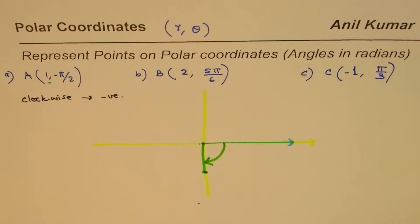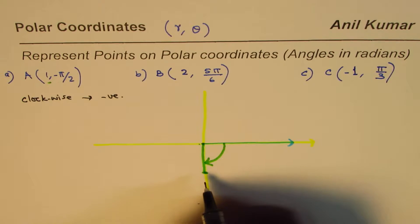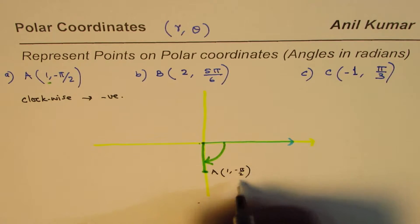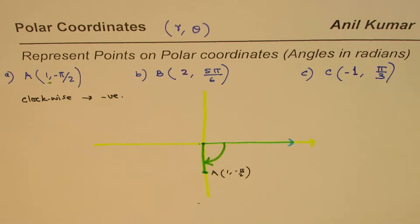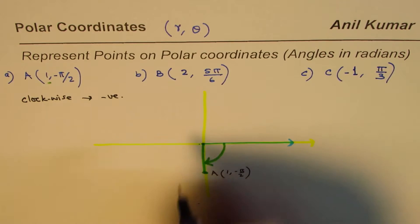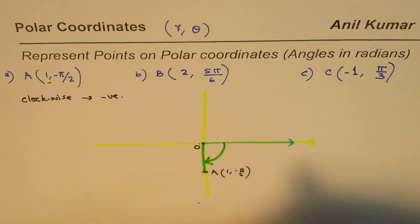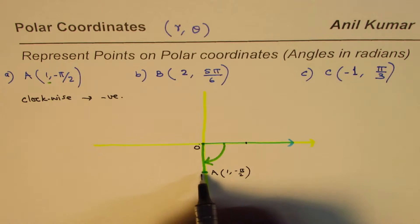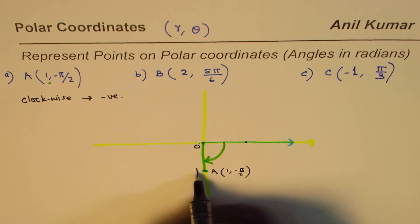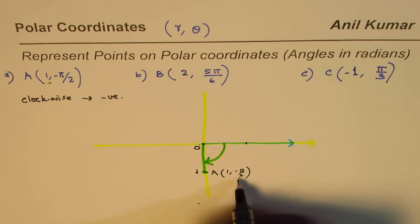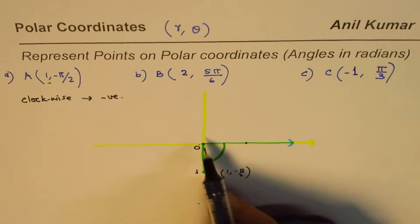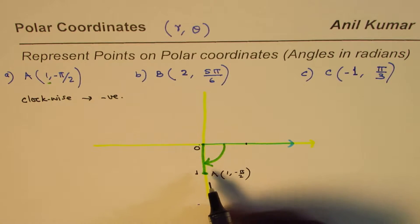The line segment representing point A at (1, -π/2) goes downward, and r = 1 means 1 unit away from the pole. So 1 unit in that downward direction gives us point A. This is not negative 1 — the coordinates are (1, -π/2).